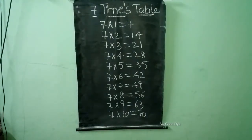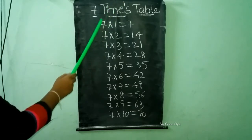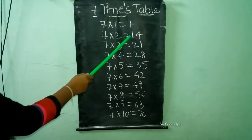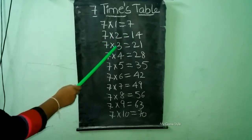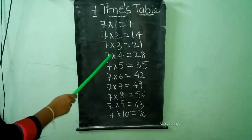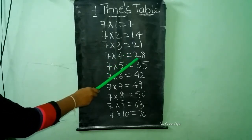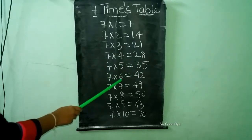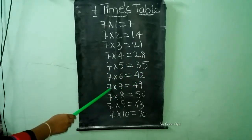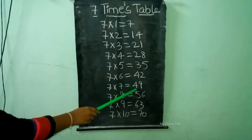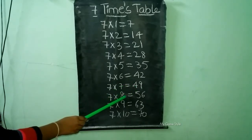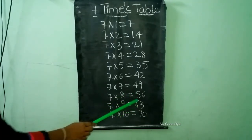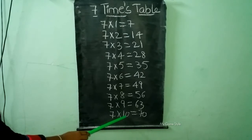7 times table. 7 times 1 is equal to 7. 7 times 2 is equal to 14. 7 times 3 is equal to 21. 7 times 4 is equal to 28. 7 times 5 is equal to 35. 7 times 6 is equal to 42. 7 times 7 is equal to 49. 7 times 8 is equal to 56. 7 times 9 is equal to 63. 7 times 10 is equal to 70.